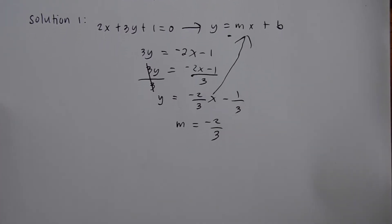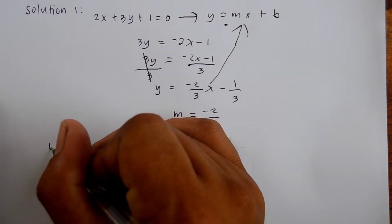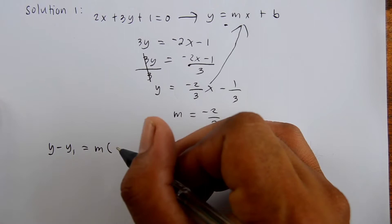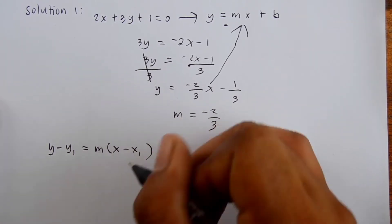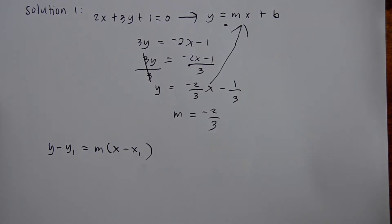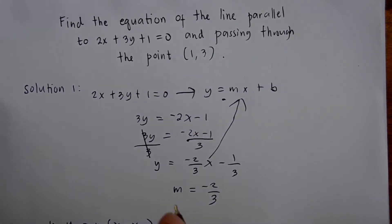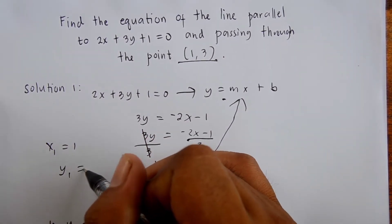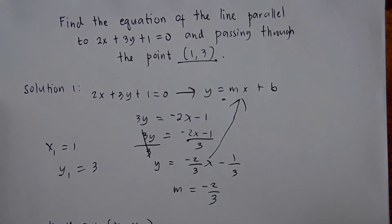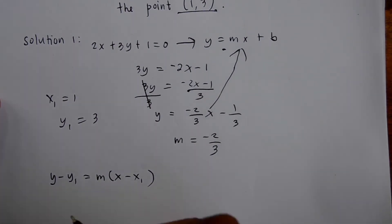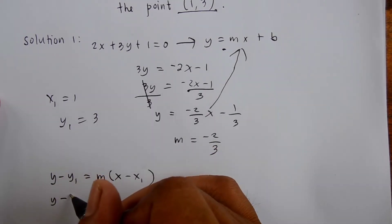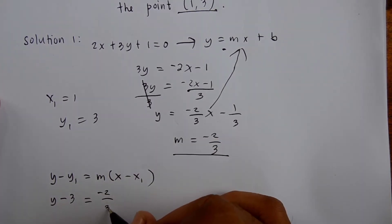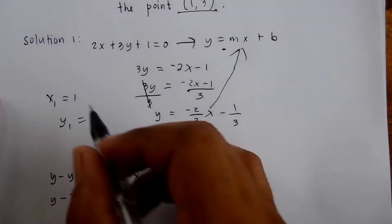Then we use point-slope form: y minus y sub 1 equals m times the quantity of x minus x sub 1. We identify x sub 1 and y sub 1: x sub 1 is 1 and y sub 1 is 3, using the given point. Substituting, we get y minus 3 equals negative 2 thirds times the quantity x minus 1.